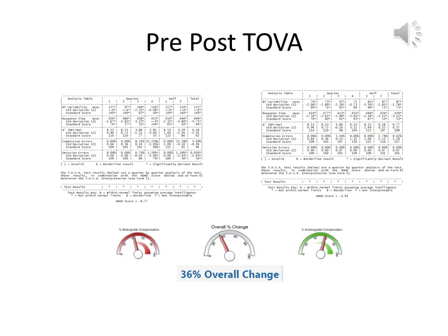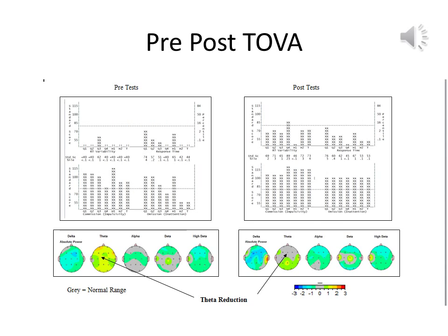TOVA score changes are also significant. As you can see here, TOVA scores have changed from minus 8.7 to an almost normal minus 3.4. Variability has decreased, response time increased, and errors of omission have decreased. The reduction in theta noted is by almost two standard deviations to an approximately normal level.